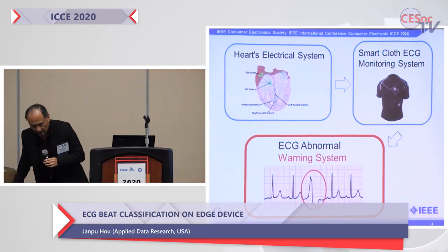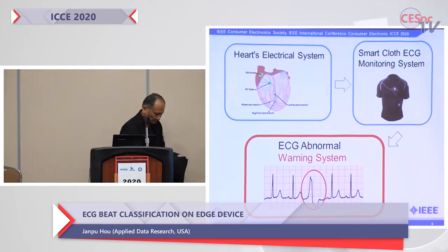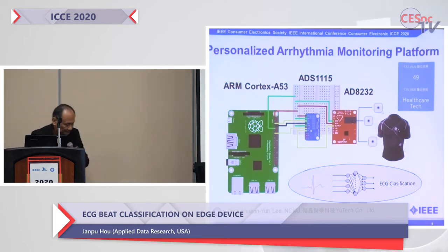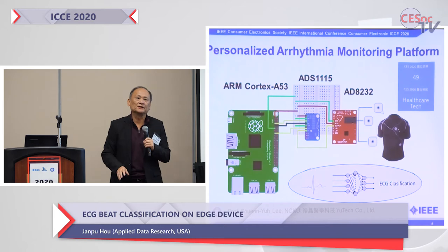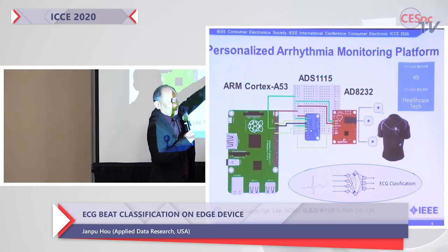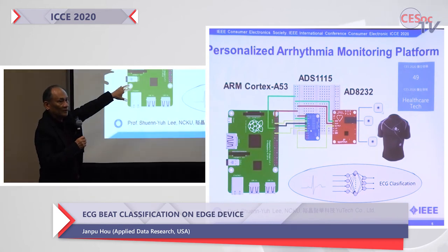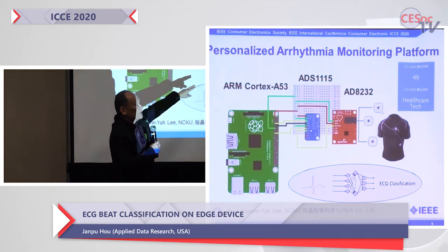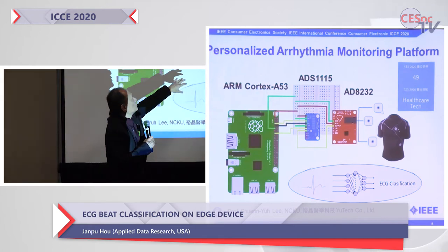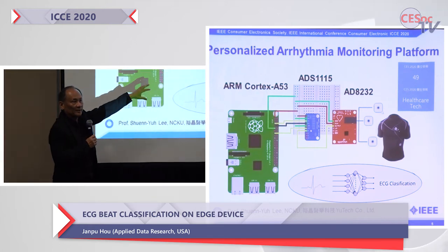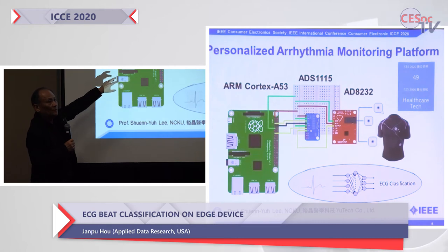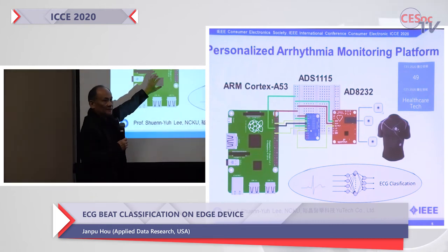People are making smart clothes these days. This is just a schematic of the experimental system. Basically, you can buy all these components at relatively very low cost — a couple of dollars. The first one is a three-lead system: positive, negative, and ground. It's an analog signal, so you have an A-to-D converter with amplifier, and then we try to build a model on the Raspberry Pi or an embedded system.